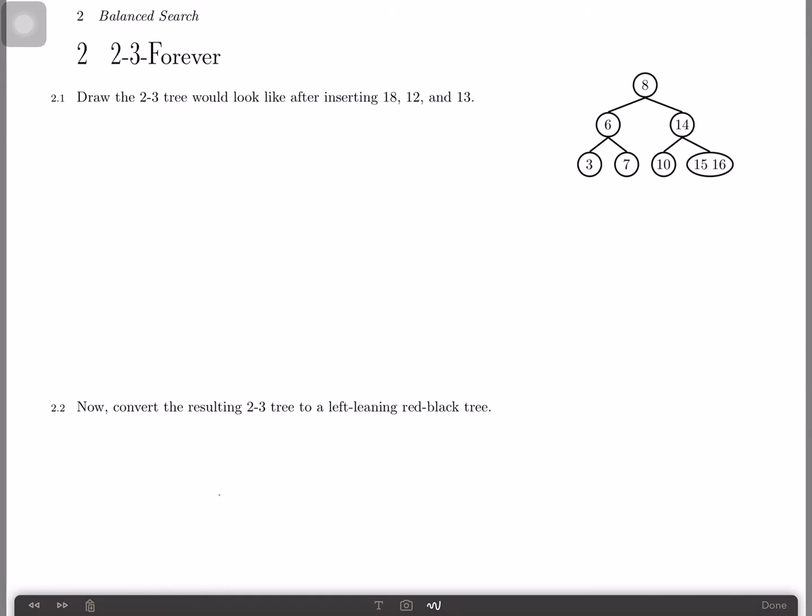So in a 2-3 tree, you can notice immediately, like right here, that you can have more than one item per node. In 2-3 trees, you can have at most two items per node.